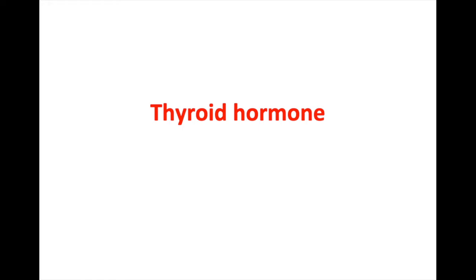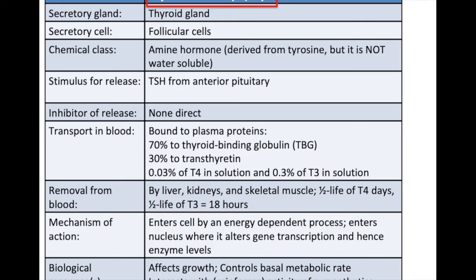Here we'll talk about thyroid hormone. Thyroid hormone comes from the thyroid gland in the neck and is generally stored in follicles that are surrounded by follicular cells. The thyroid hormone is held within a thyroglobulin structure.